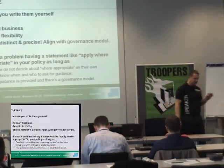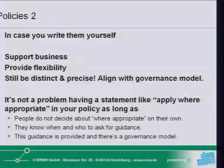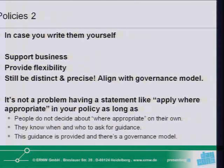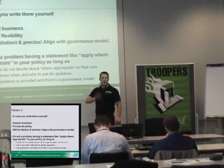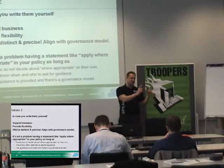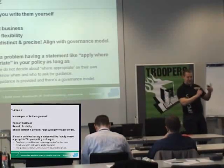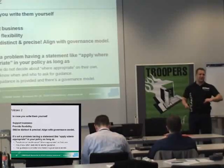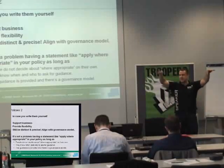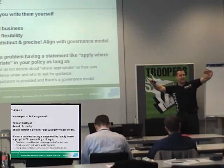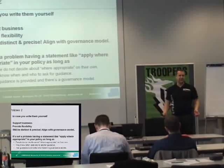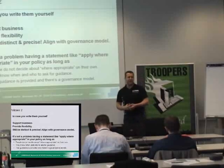So if there is something in the policy like 'strong authentication for privileged access,' you have to understand what it means — especially when you are new in the job. Think of a 30–35-year-old person promoted to ISO in an organization of 500 to 5,000 users — they inherit a policy. Try to find out what is meant by such clauses, as this happens very often. In case you write policies yourself, support business — this is the most important point, even though it might sound like we're surrendering.